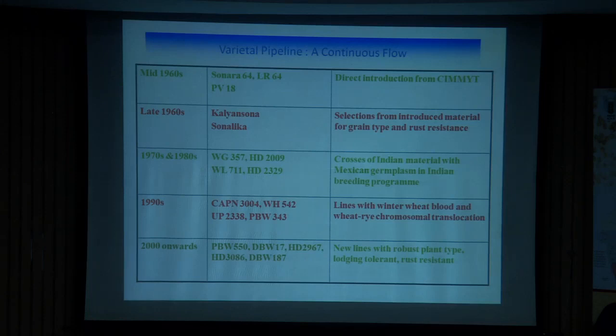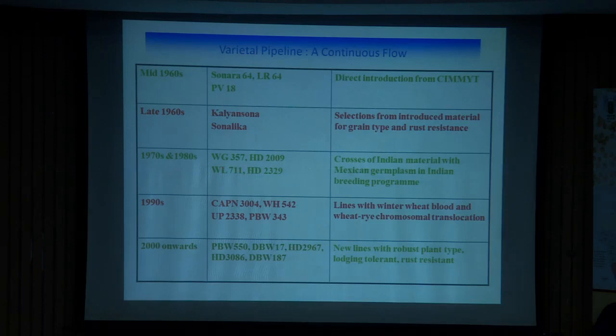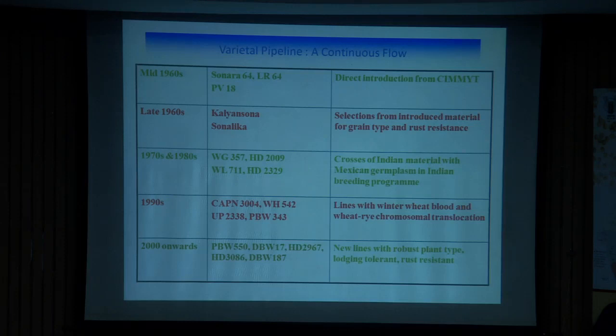The varieties contain some genes, and once those genes are overcome by pathotypes, they become susceptible. These mega varieties have yield potential of more than 6–7 tonnes, but when rust virulence overcomes them, they must be withdrawn. As breeders and scientists, we started developing varieties with different gene combinations resistant to evolving races of pathogens, which is why rust epidemics didn't happen.